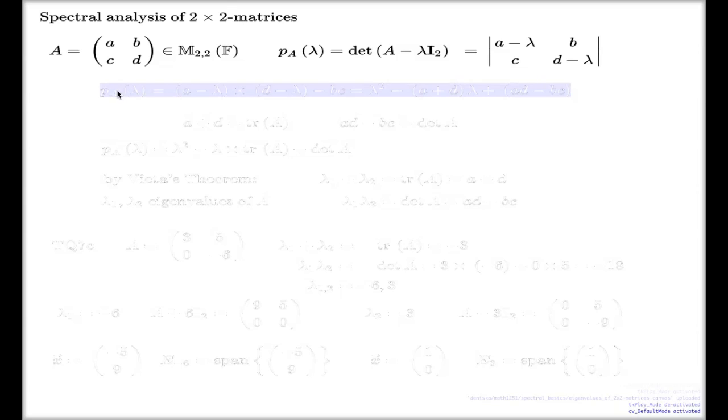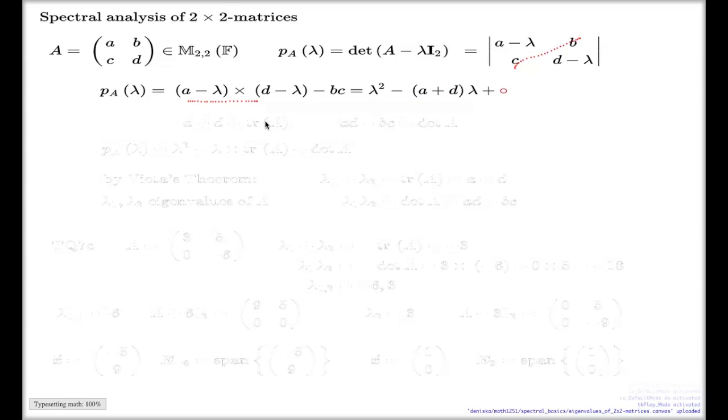Here's my computation: a take λ times d take λ across here, and bc as the product across here. If you do the expansion of these factors, you will end up with the characteristic polynomial like so.